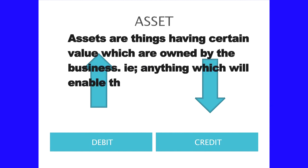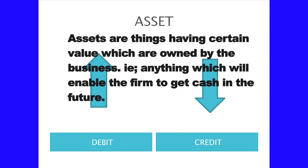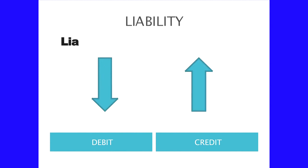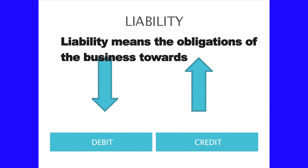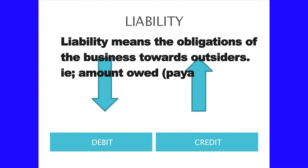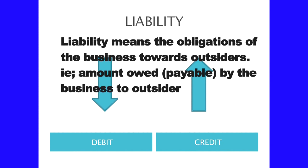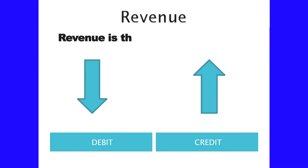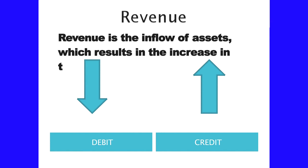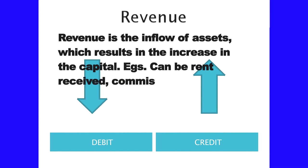Assets are anything which will enable the firm to get cash in the future. Liabilities means the obligations of the business towards outsiders — the amount payable by the business to outsiders can be called a liability. Revenue is the inflow of assets which results in the increase in capital. We can include rent received as revenue, and commission received also as revenue.